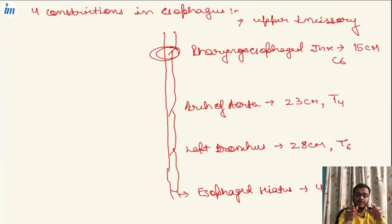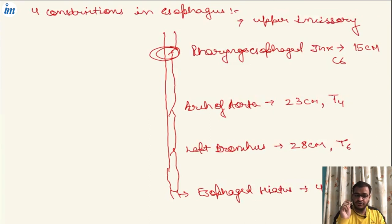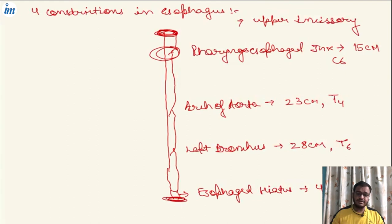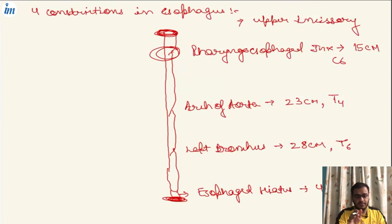The clinical relevance of these constrictions is important. When a gastroenterologist performs an endoscopy, they must put the endoscope very carefully because at the level of the upper esophageal sphincter, the esophageal lumen is the thinnest. If the gastroenterologist is not well trained, a tear or injury can happen at the level of the esophagus.